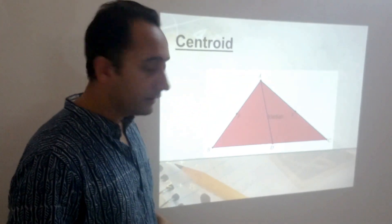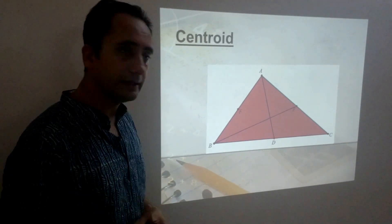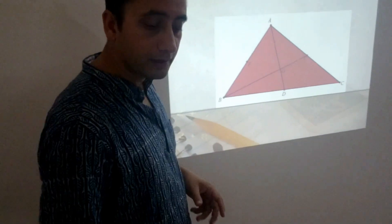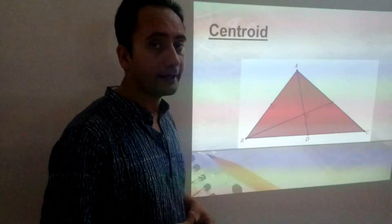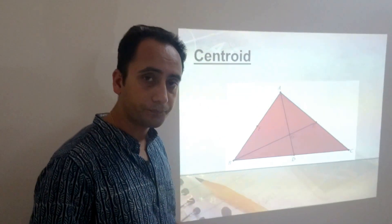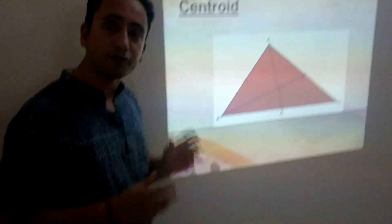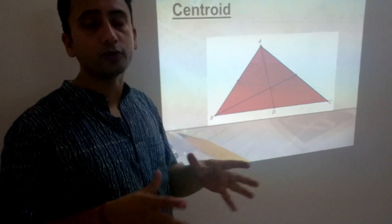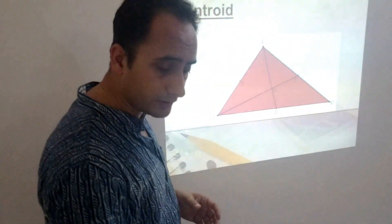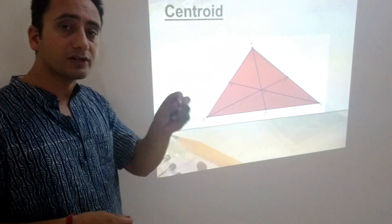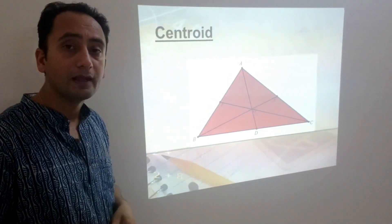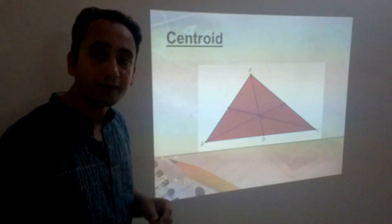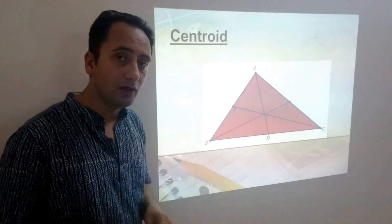Median is defined as a line segment joining the midpoint of one side of a triangle to the opposite vertex. Let's draw another median, that is BE. Now these two medians intersect at a specific point, and that point is generally represented by G and is known as the centroid of a triangle. It is sufficient to draw two medians to locate the centroid. Even if you draw the third median, it will also intersect the first two medians at point G. That is, all three medians intersect at a specific point G, which is known as the centroid of a triangle.